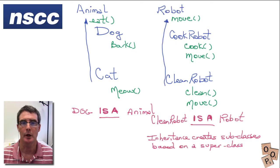And so we look at creating a subclass, removing move out of these subclasses, creating a superclass called robot that has the move method and removing it from the subclasses. And so a clean robot is a robot so this inheritance makes sense.